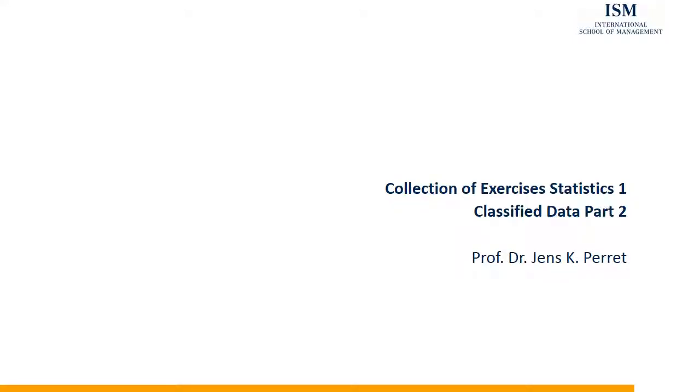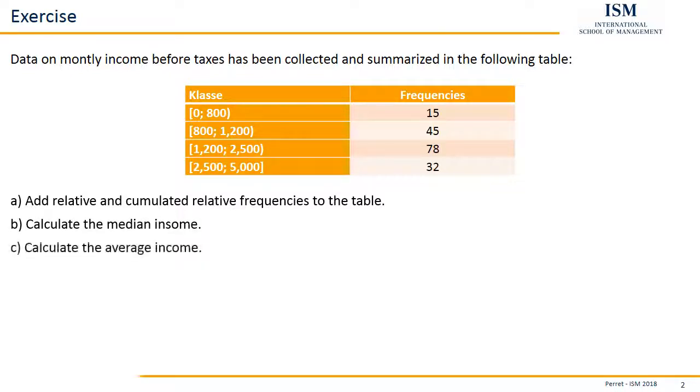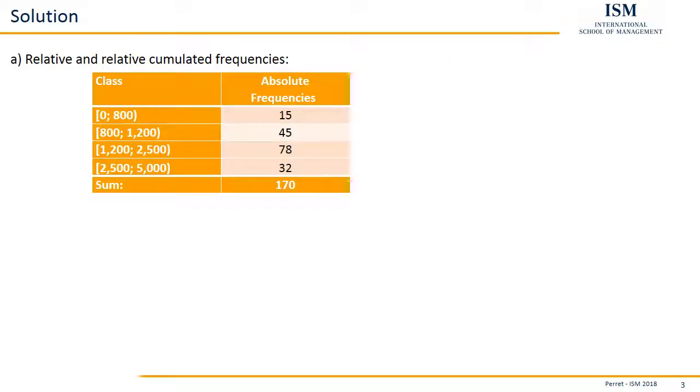Welcome to a new part of the ISM Statistics 1 exercise set. This time with an exercise on classified data. Let's take a closer look at the exercise. Data on monthly income before taxes has been collected and summarized in the following table. Add relative and relative cumulated frequencies to the table. Calculate the median income and calculate the average income. Let's work our way through those three tasks.